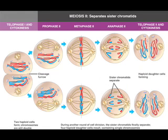For telophase I and cytokinesis, nuclear envelopes may reform or the cell may quickly start meiosis II. These steps for meiosis I are analogous to mitosis, where two complete daughter cells form. The only difference in meiosis II is that in anaphase II, sister chromatids separate, producing four haploid daughter cells, each containing half the number of chromosomes found in the original parent cell. The chromatids of each chromosome are no longer identical because of the crossing over of genes and the independent assortment of chromosomes.